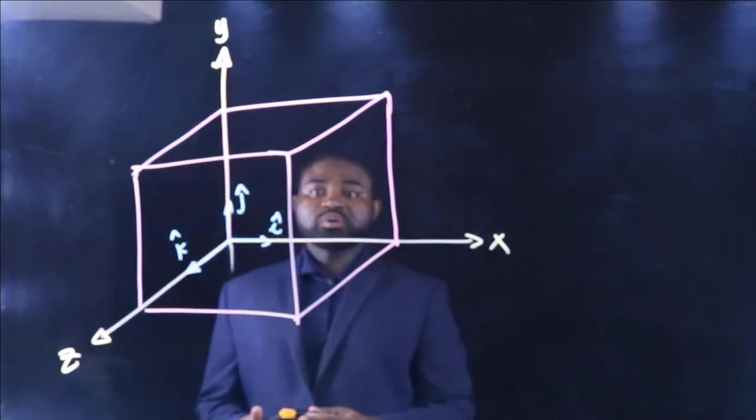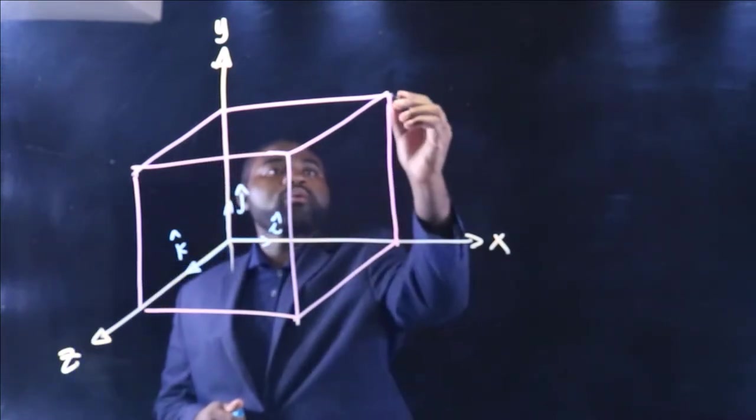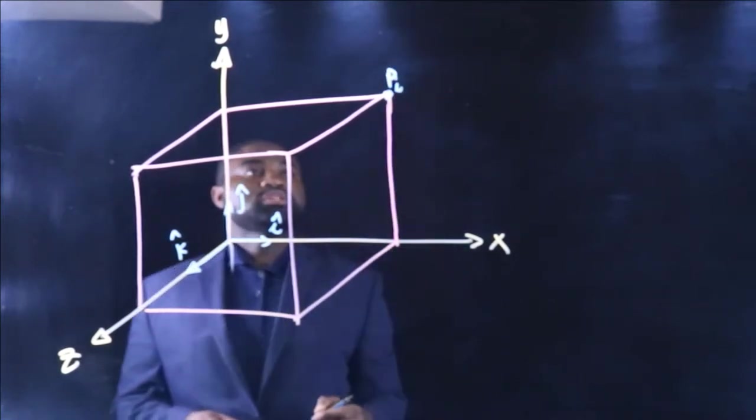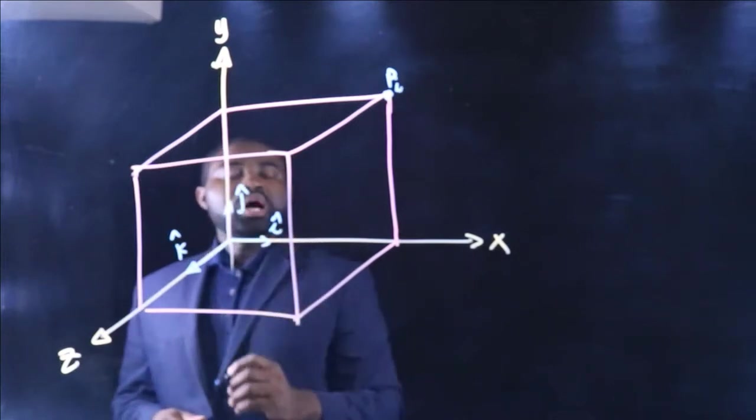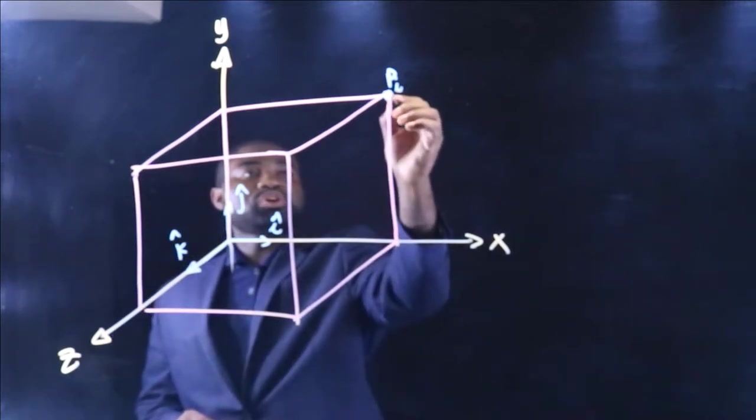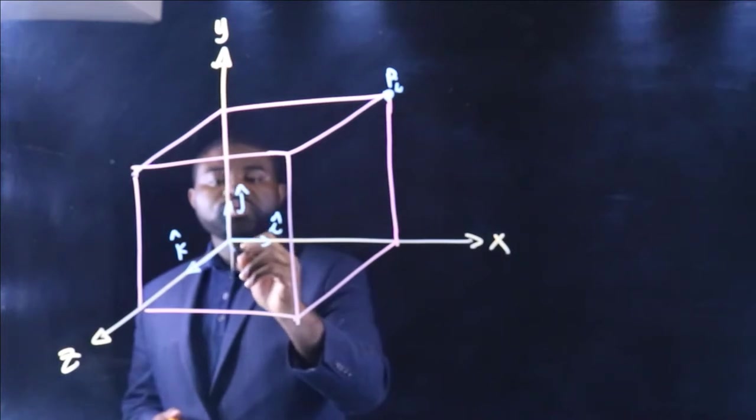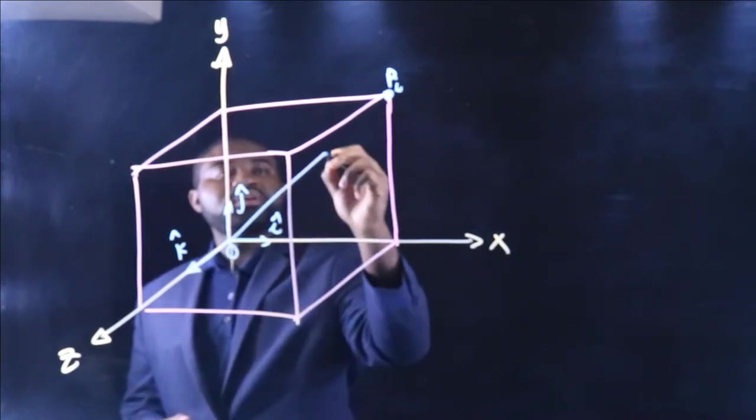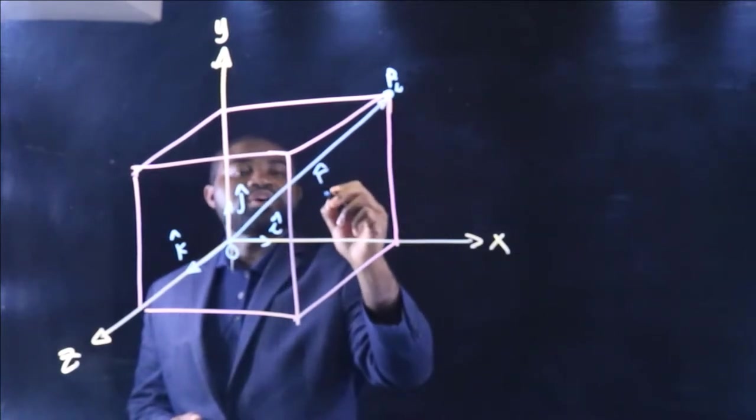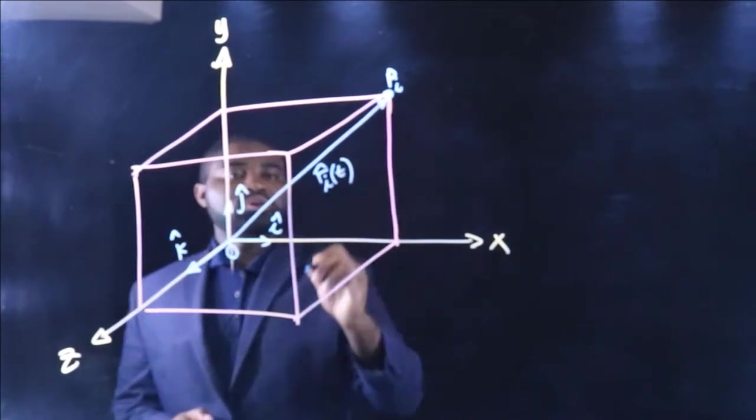Suppose we have an object, let's say an object P at this position P initial. How do we define the position of that object? To define the position of this object P, we will draw a position vector from the origin O to the point P.